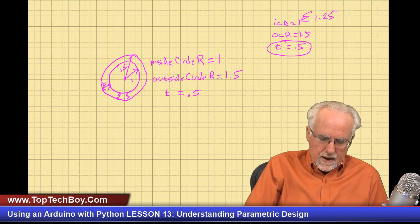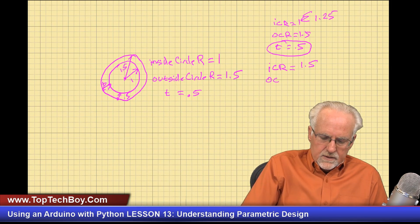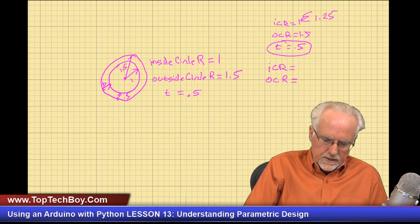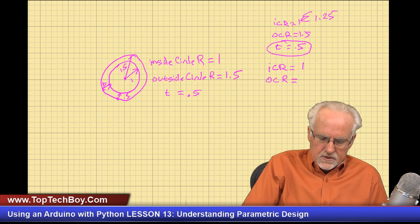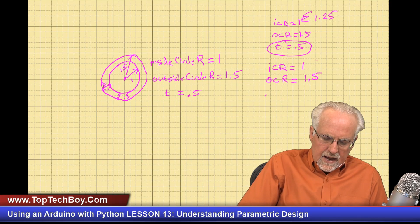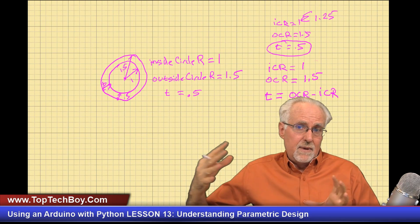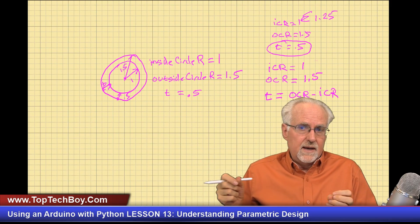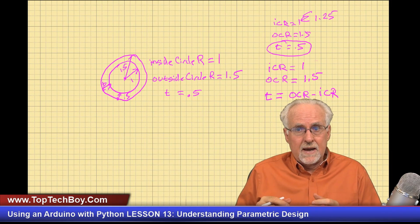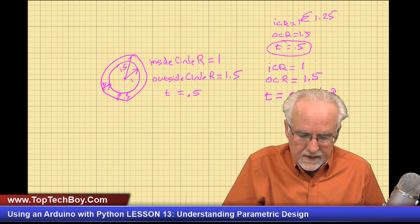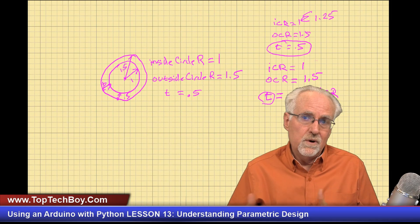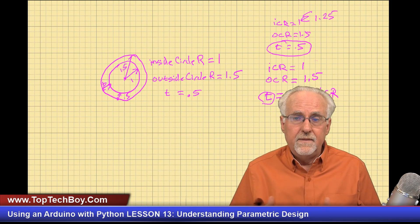So what would make more sense? We want to use parameters, but I would say: ICR stays at 1, OCR stays at 1.5, and now for T — the thickness — I would say T is equal to OCR minus ICR. Now if I go in and make the outside dimension different because I want to tweak my design, or make the inside dimension different, the model doesn't break because the thickness T automatically adjusts to accommodate the other things you've changed.